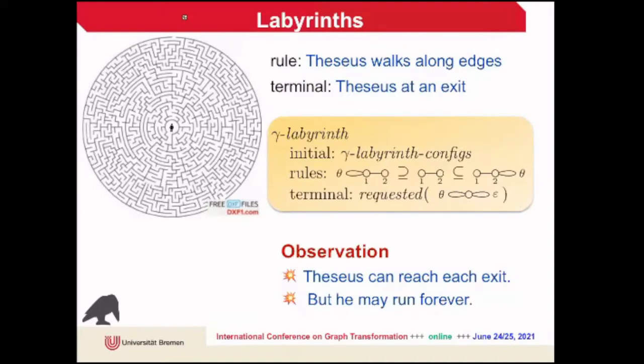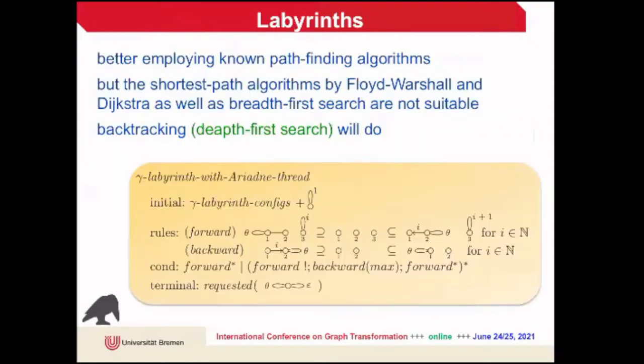If you try to solve a labyrinth, to leave it, you need only one simple rule. This solving rule allows Theseus to pass edges from one incident vertex to the other. The goal is easily specified by the request that Theseus's loop is at an exit. Even this very simple modeling of the labyrinth puzzle allows Theseus to reach every exit—easily to prove—but the problem for him is he may run forever because he can run on a cycle without an exit and never find an exit. But one can do much better.